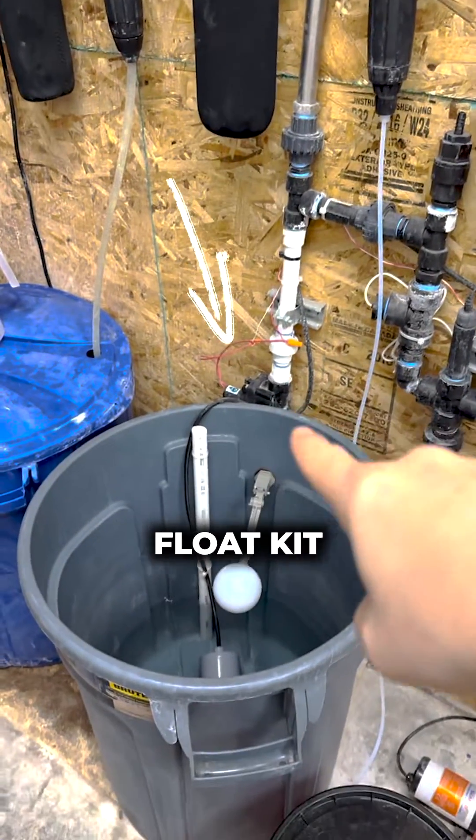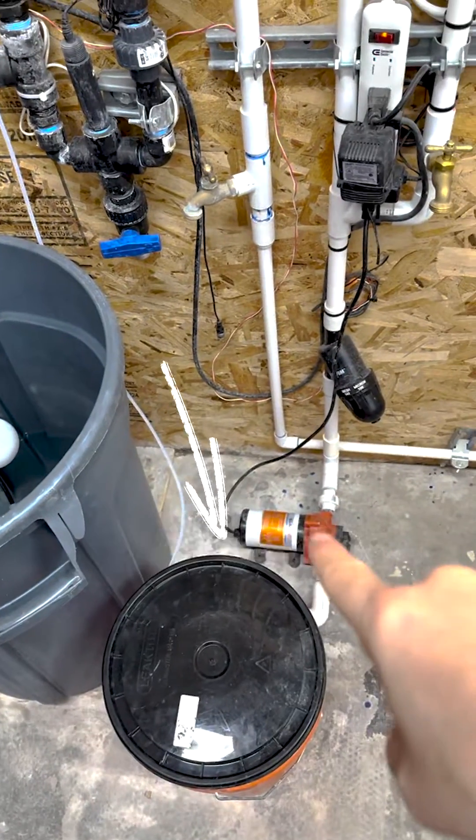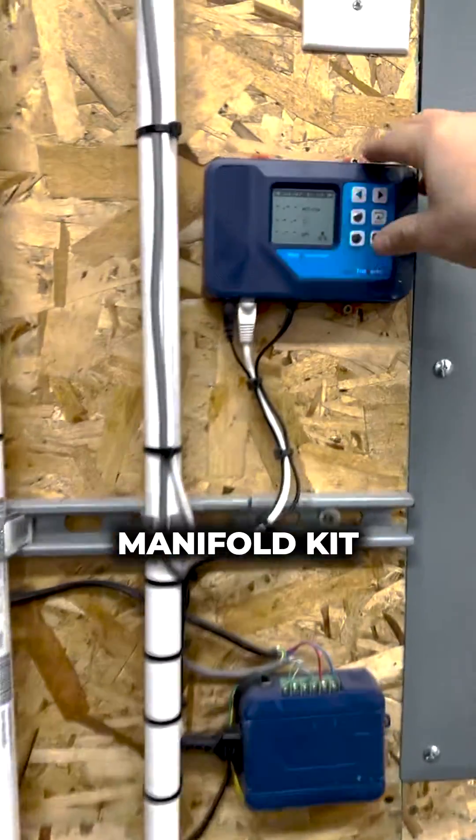The Craft Farmer Reservoir Float Kit fills the reservoir with a float. Out of that it goes into the SureFlow and then into the room to the Craft Farmer Manifold Kit.